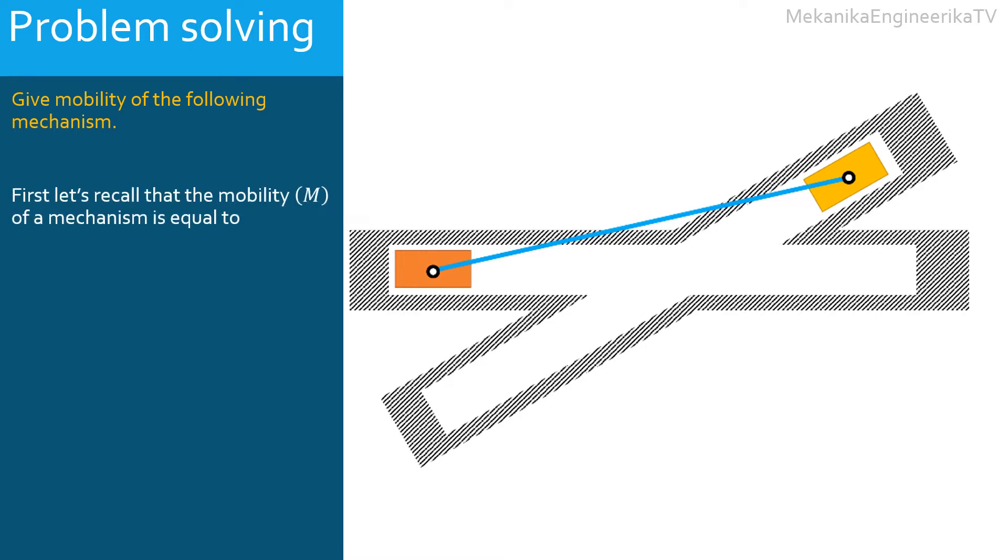First, recall that the mobility M of a mechanism is equal to 3(L - 1) - 2J1 - J2, where L is the number of links in the mechanism.